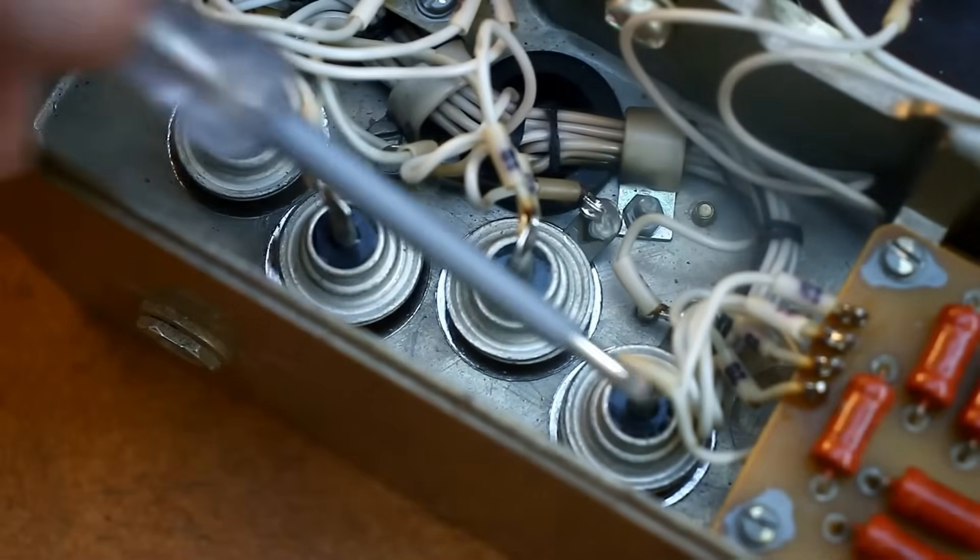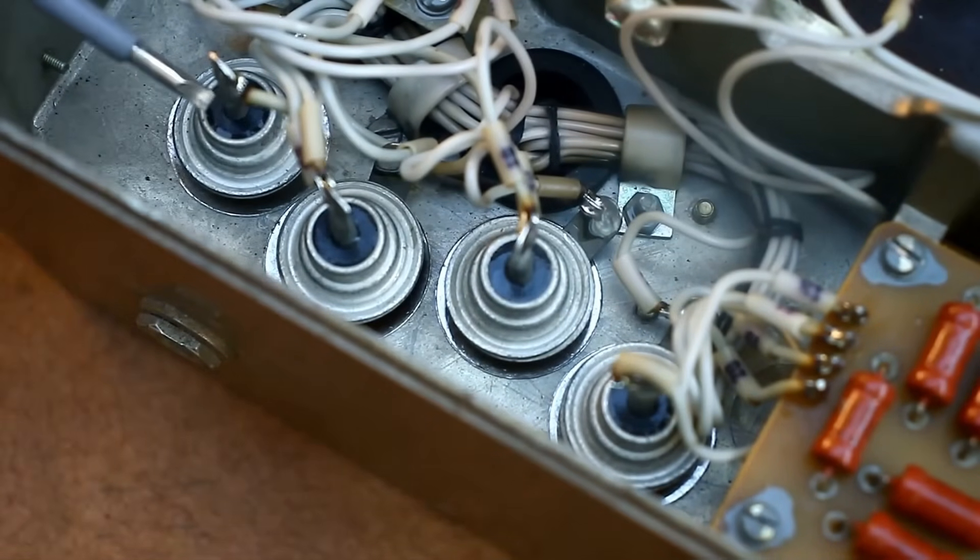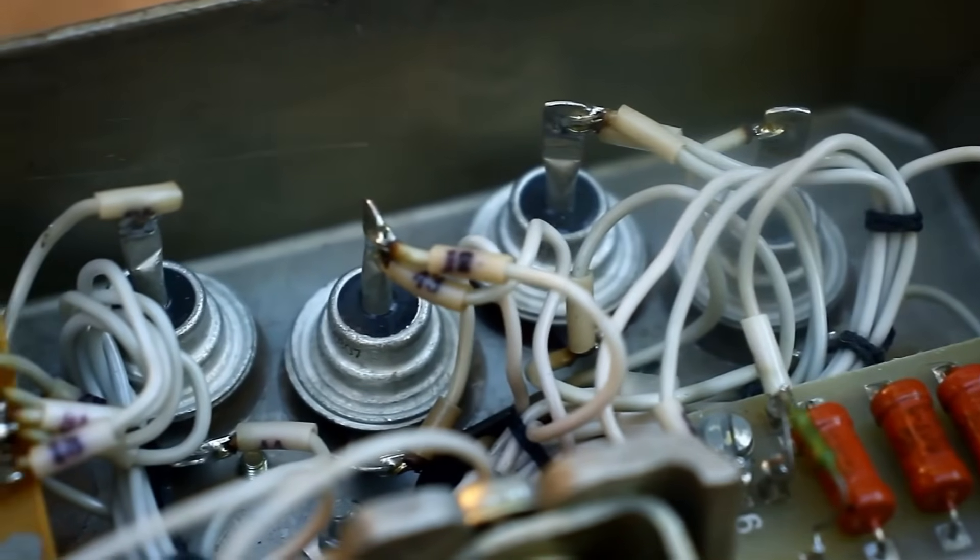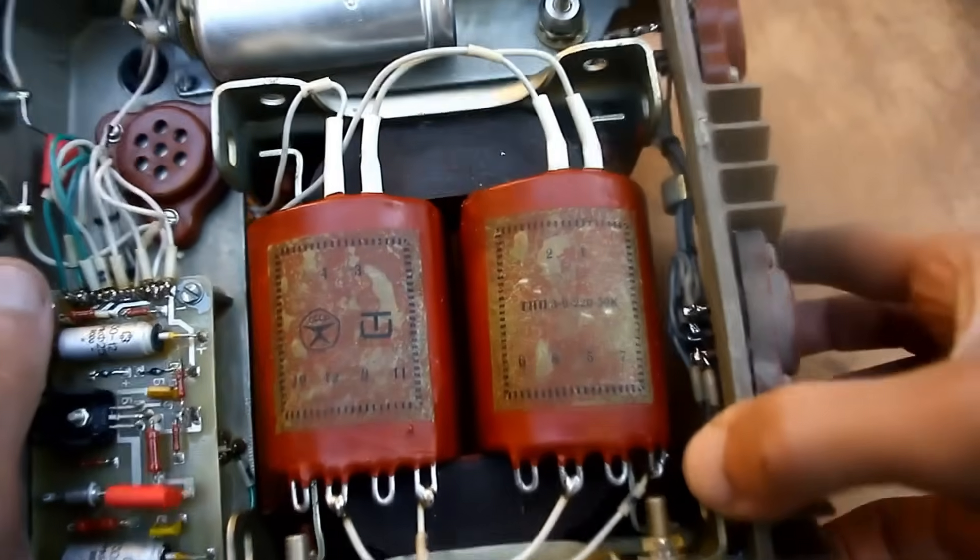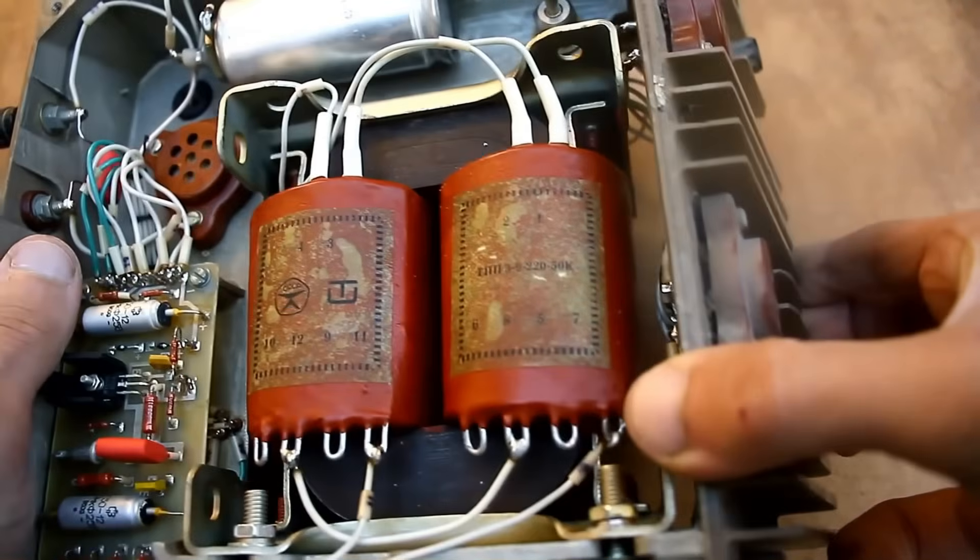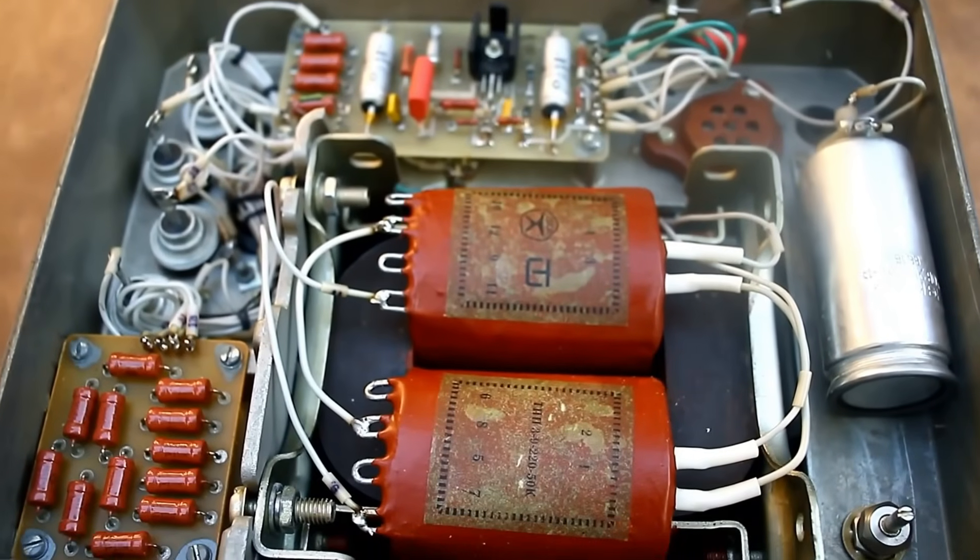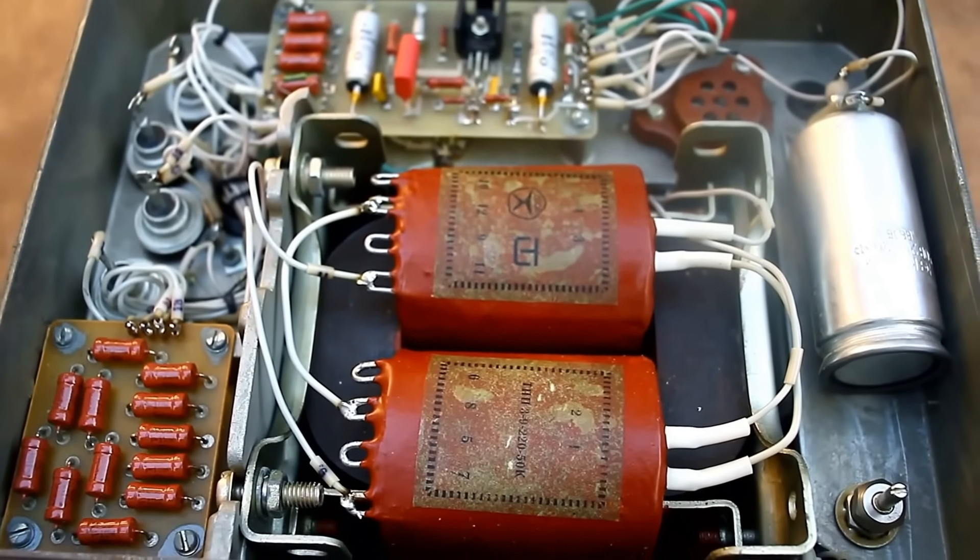The rectifier is built on 4x10A KD242 diodes. They are also well-cooled thanks to the casing. The power transformer, it's a sight to behold, this is a TPP 3-9 with sealed windings for moisture protection. Practically silent, powerful, and reliable.